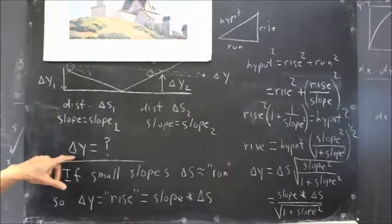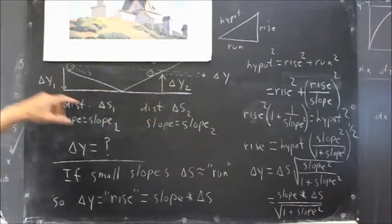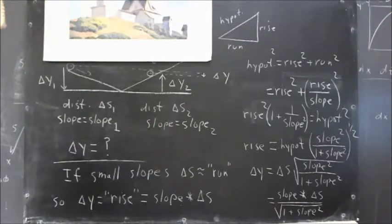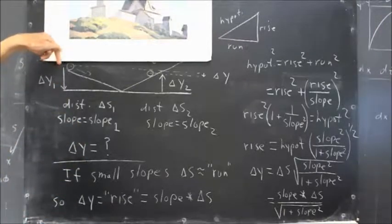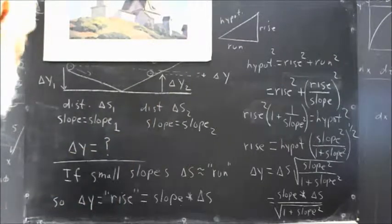We're not going to talk about that. My question is then, what is delta Y in terms of delta S1, slope 1, delta S2, and slope 2? Well, we could say that delta Y is delta Y1 plus delta Y2.